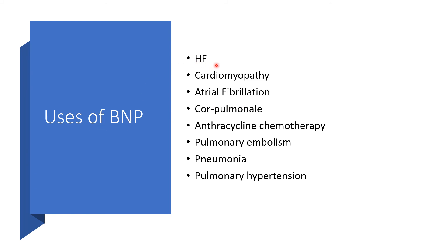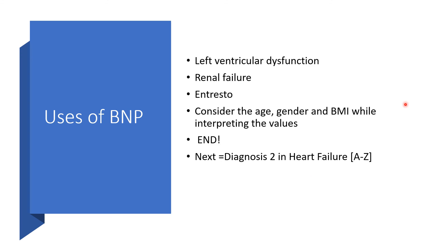Uses of BNP include: heart failure, cardiomyopathy, atrial fibrillation, cor pulmonale — that is lung disease leading to right heart failure — anthracycline chemotherapy, pulmonary embolism, pneumonia, and pulmonary hypertension. So the elevated value of BNP that may be confusing in the context of heart failure might be related to any of these. Also, left ventricular dysfunction and renal failure. With Entresto, BNP will be high because there will be inhibition of its destruction, though NT-proBNP values will not be affected by Entresto ingestion.